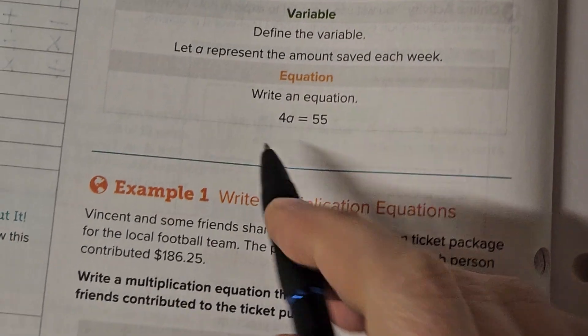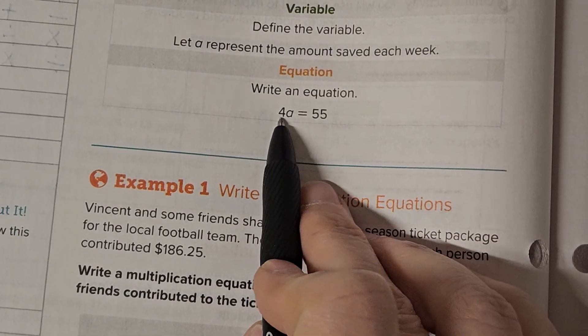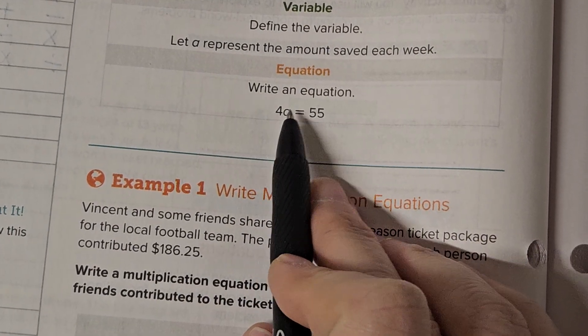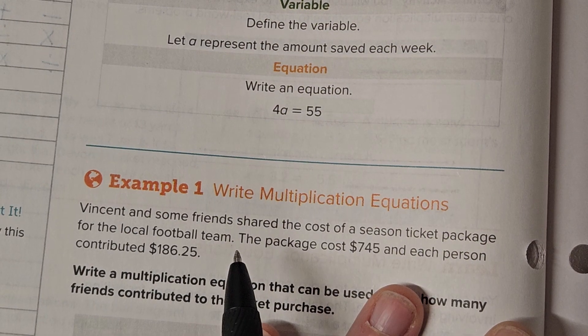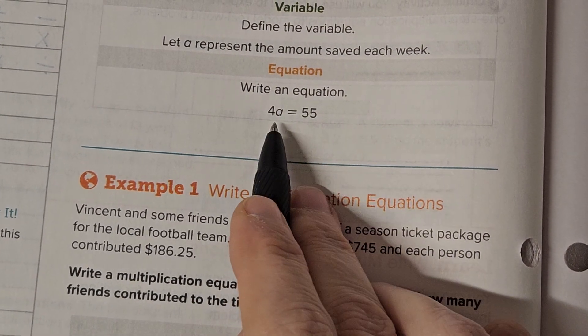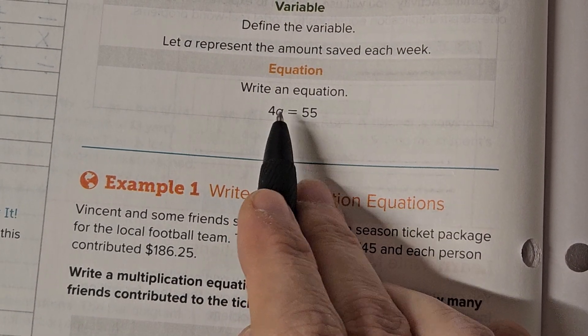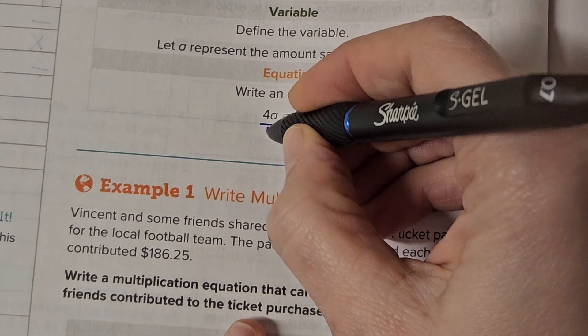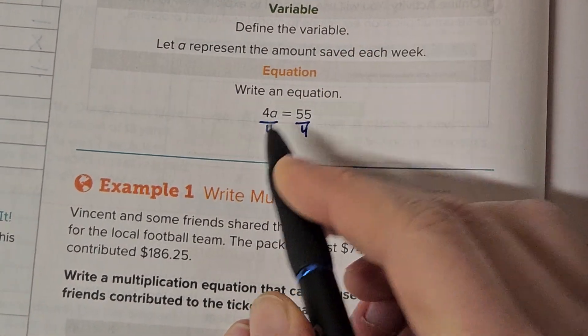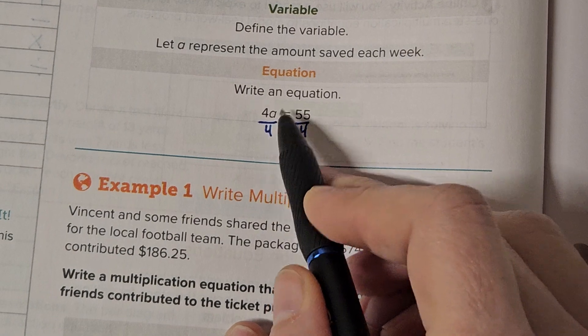So let's look here. We've got 4 times a. Remember, a number next to a letter means times. So 4 times a equals 55. What's the inverse of times? Divide. So we're going to divide both sides by 4. And 4 divided by 4 is 1, and 1 times a is a.